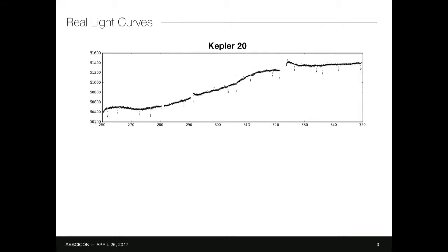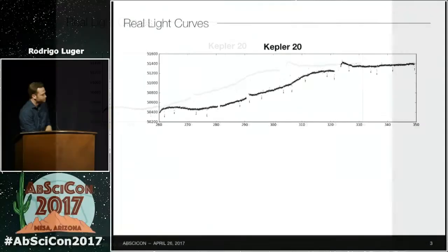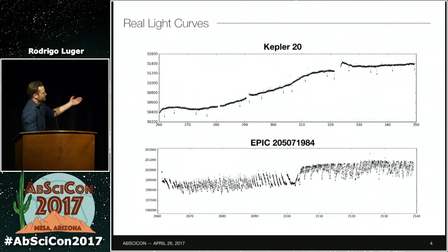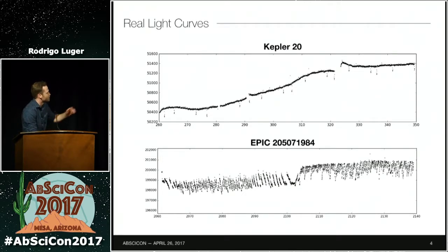This is what a typical planet-hosting Kepler star looks like — in this case, an 11th magnitude Kepler band star with a hot Jupiter. This is a very similar star observed by K2, also 11th magnitude, also has transiting planets, and yet the raw data look terrible. You could not, by eye, pick out any transits in this light curve.